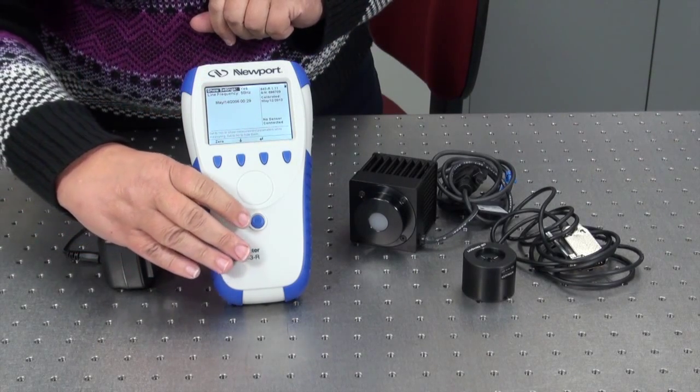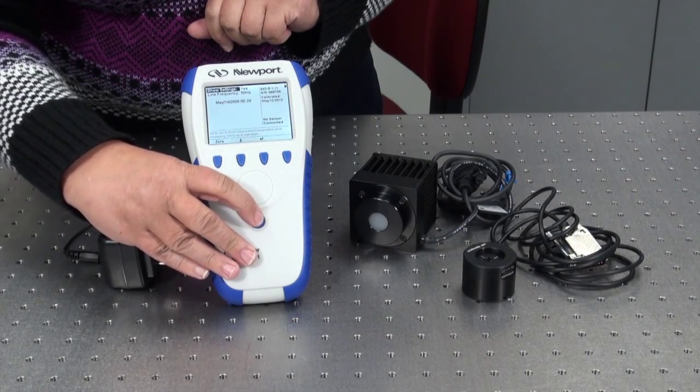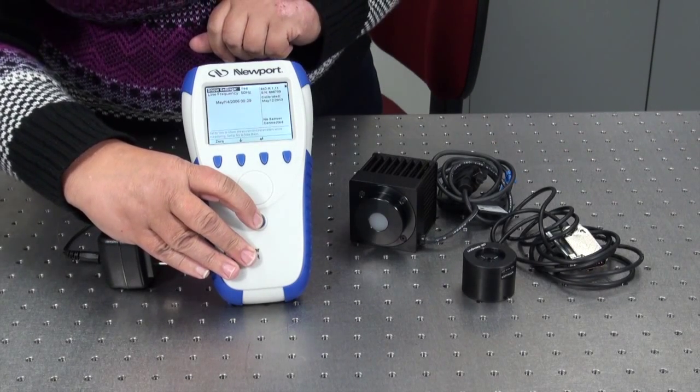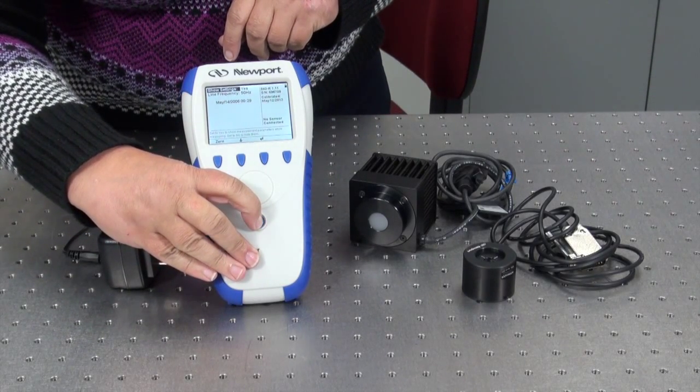If you need to backlight the monitor screen for viewing ease, briefly press the power button again to toggle between the three backlight settings. To turn the power meter off, simply hold down the power button for a few seconds.